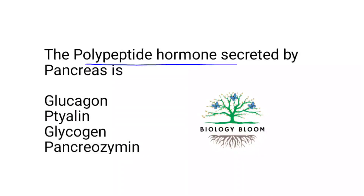Polypeptide hormone secreted by the pancreas — the pancreas secretes a hormone that is a polypeptide; its name is glucagon.